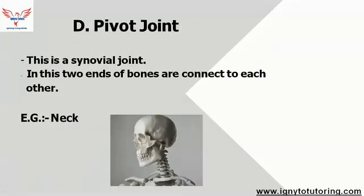The next type of movable joint is the pivot joint. This is also a type of synovial joint. In this joint, two ends of the bone are connected to each other. An example of this joint is the neck.